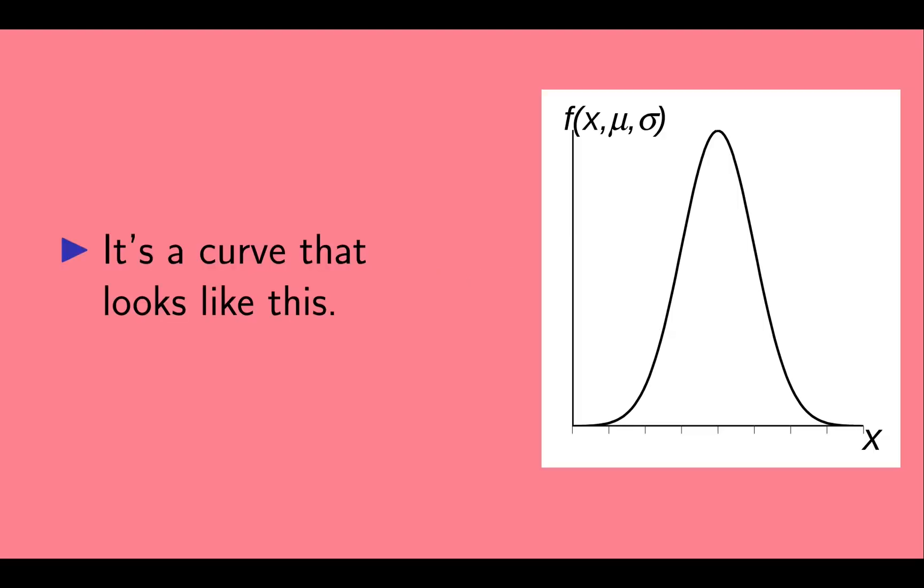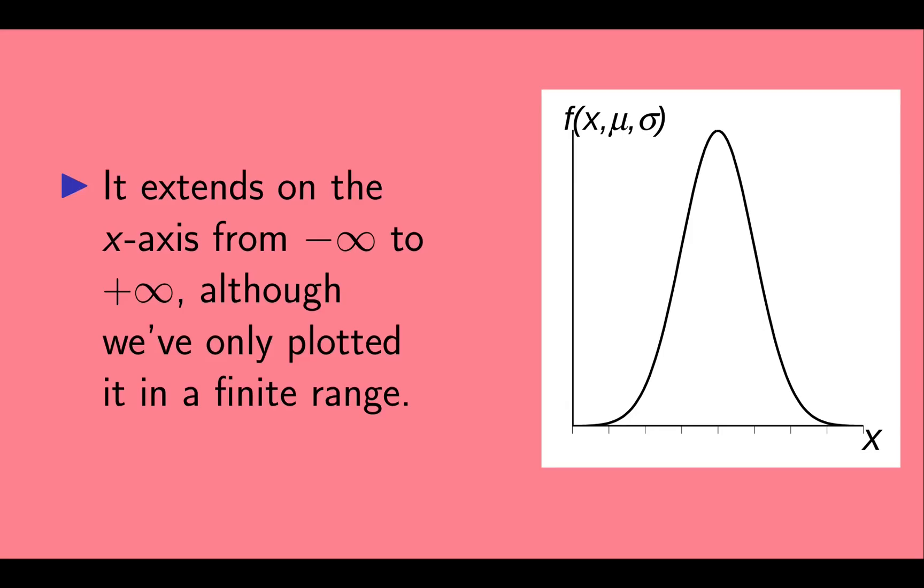So it's a curve that looks like this. Here we've called this Gaussian function f. The Gaussian distribution is also called the normal distribution. It extends on the x-axis from minus infinity to plus infinity, although we've plotted it only in a finite range.